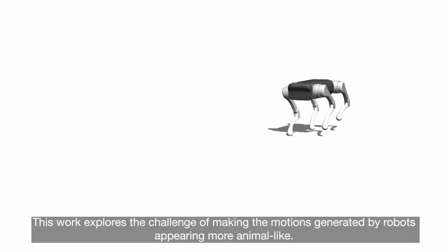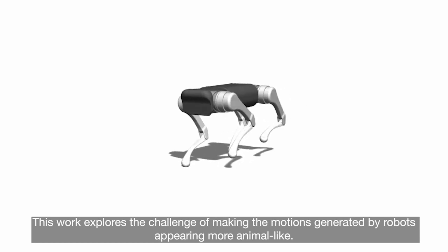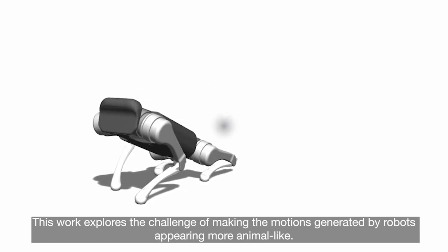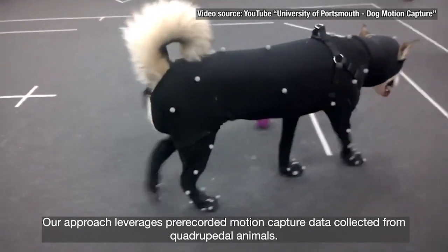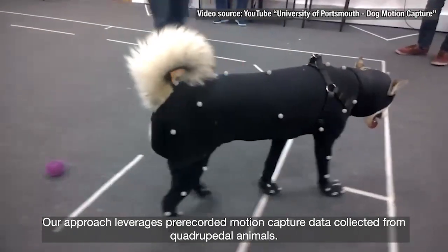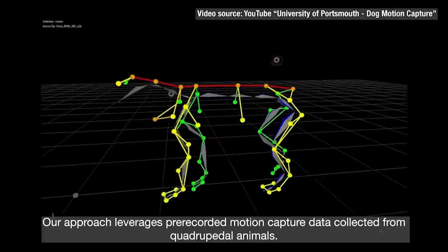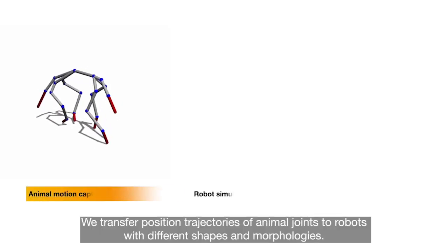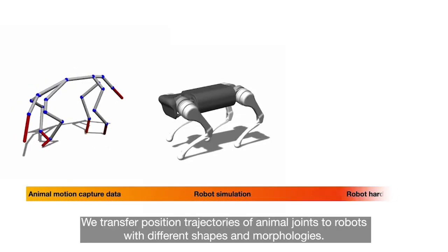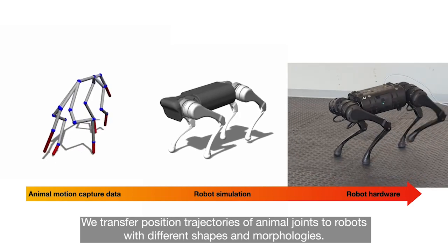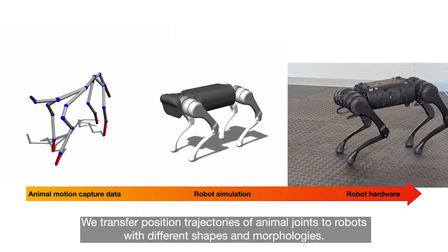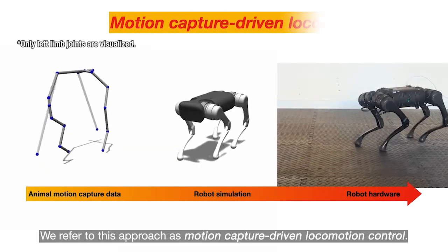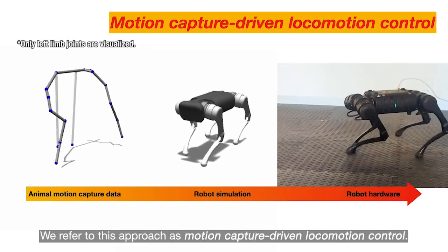This work explores the challenge of making the motions generated by robots appear more animal-like. Our approach leverages pre-recorded motion capture data collected from quadrupedal animals. We transfer position trajectories of animal joints to robots with different shapes and morphologies. We refer to this approach as motion capture driven locomotion control.